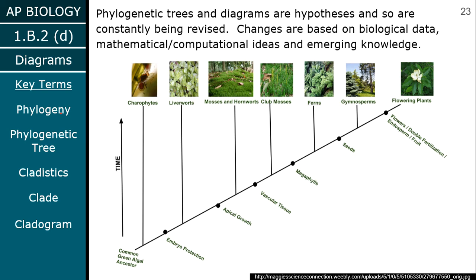Phylogenetic trees are all hypotheses. You should never look at a phylogenetic tree and say, 'that's definitely how everything evolved.' It's all just a representation of a hypothesis — we're not 100% sure; we're constructing it based on the data we have. It could have evolved differently. These things change all the time, which is really frustrating if you work with these things because you always have to keep up with the times. But that's how science works — you make changes when you get more data.